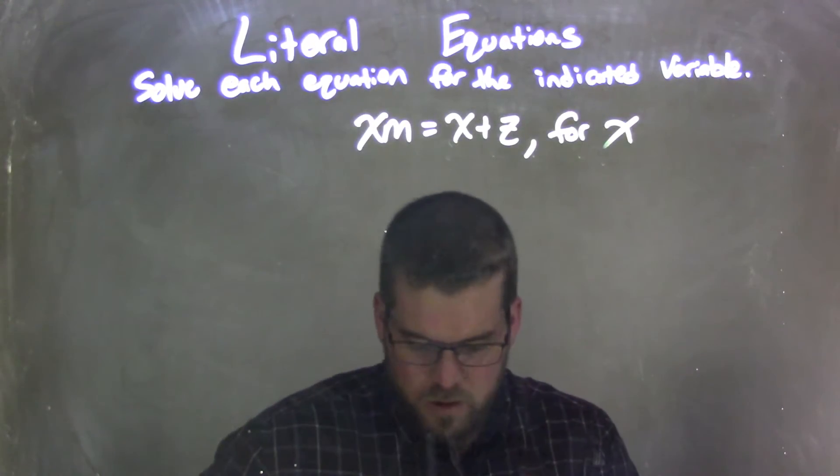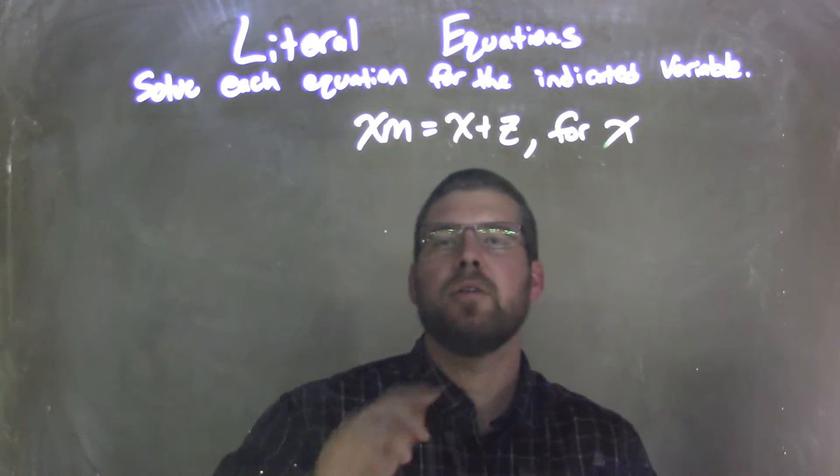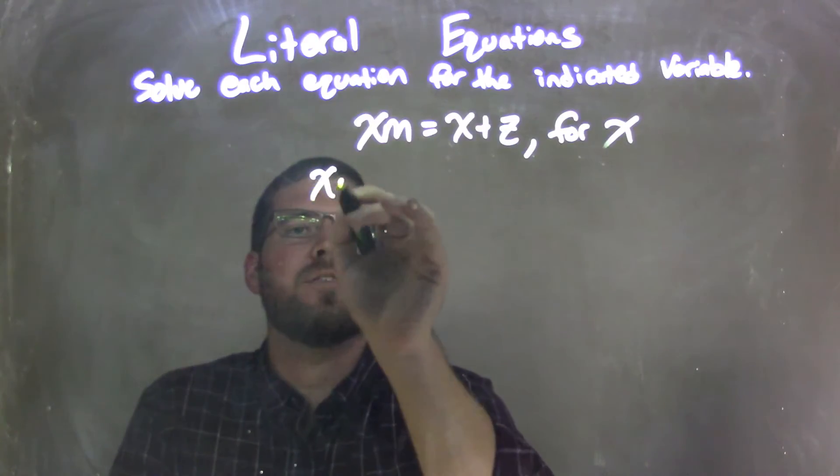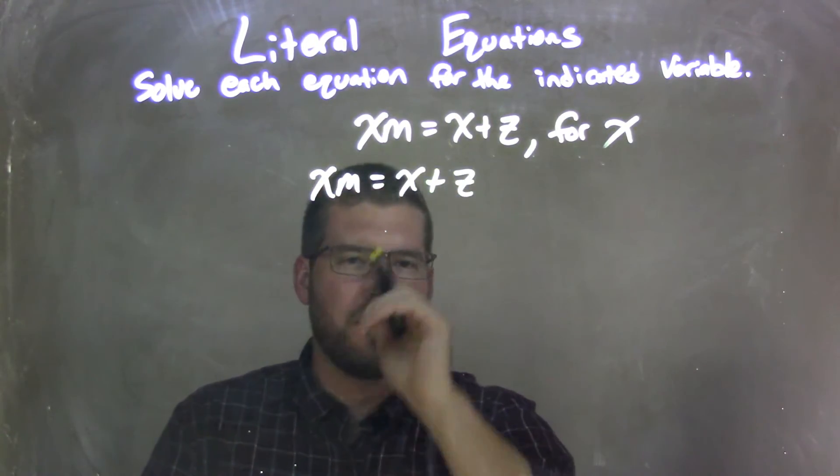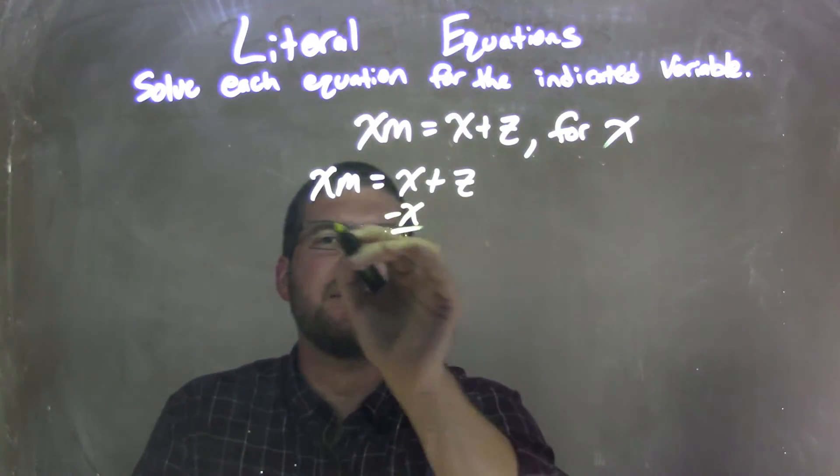Well, if I'm going to solve for that, what I need to do is I'm going to rewrite it here. xm equals x plus z, and I'm going to bring all my x's over to one side. So we subtract an x from both sides.